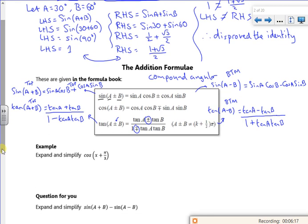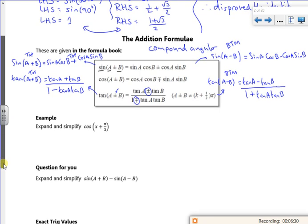So cos works exactly the same. And if you look, the signs on the cos are opposites. So cos of A plus B, because the plus is on the top, is cos A cos B minus sine A sine B.